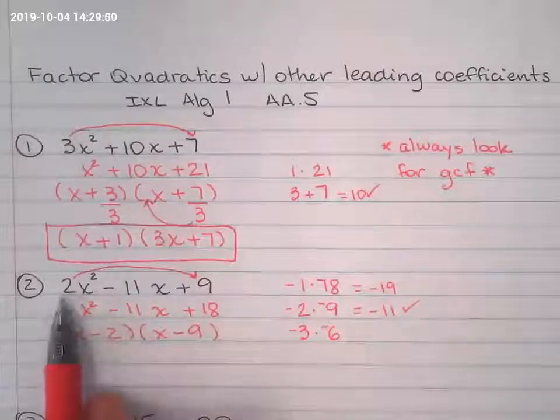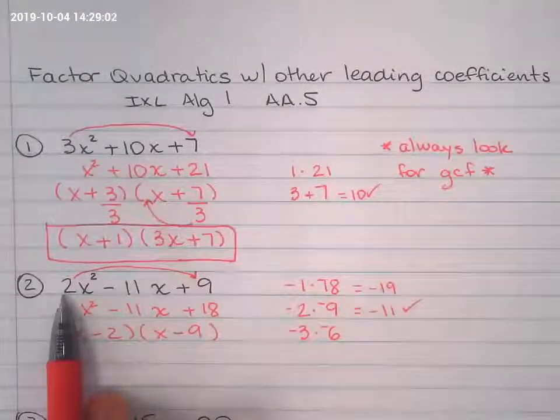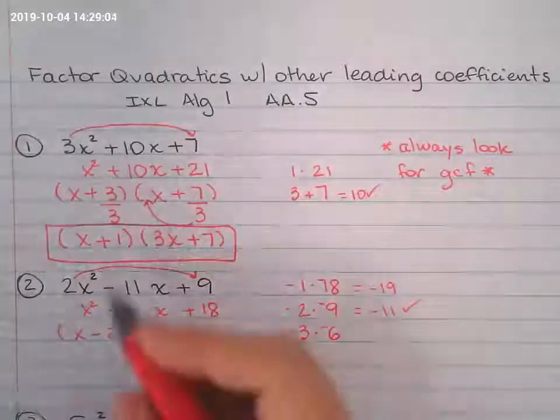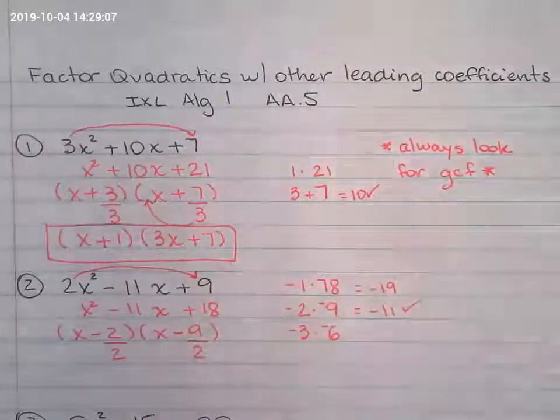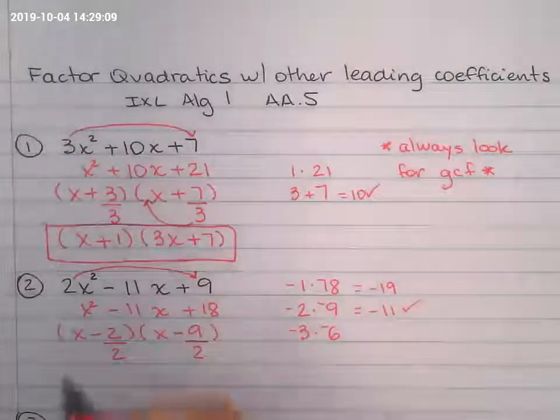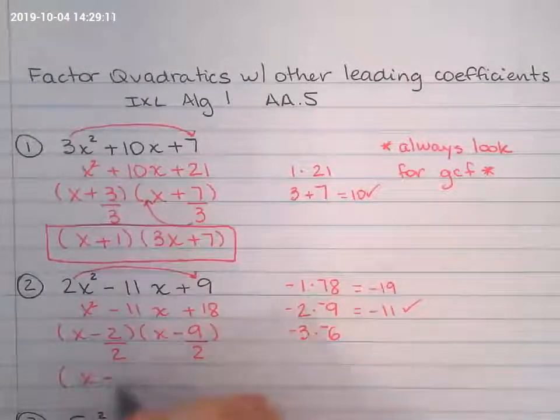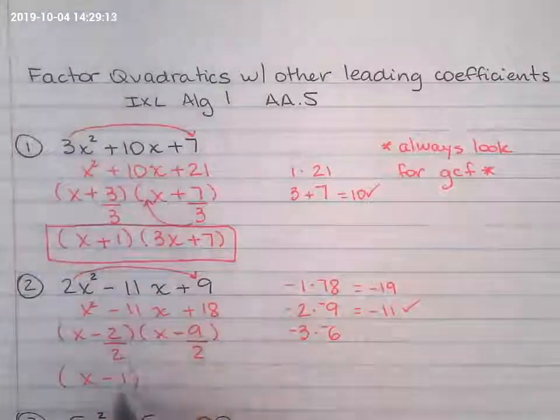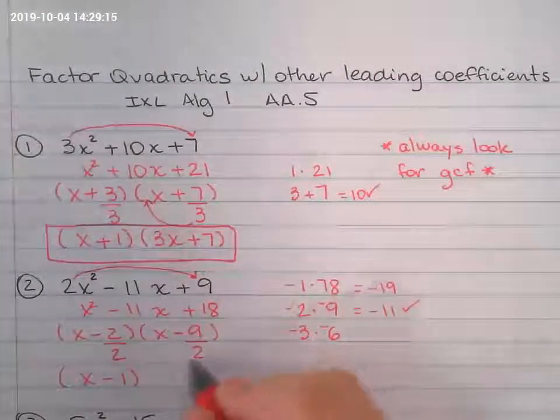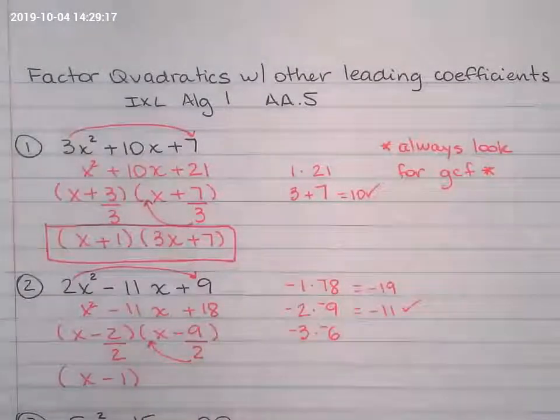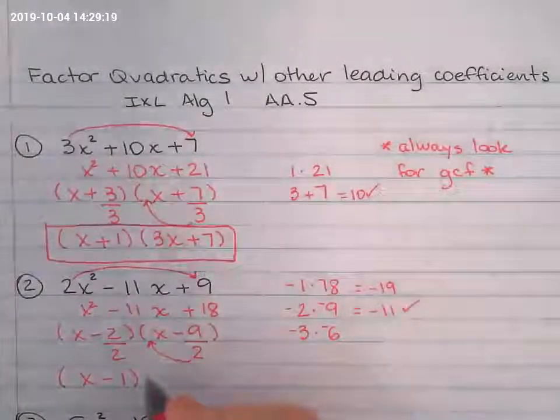Remember that because you multiply by 2, you have to come back and divide by 2. Simplify the fraction. 2 divided by 2 is 1. 9 over 2, I cannot simplify, so I have to bring that 2 back up.